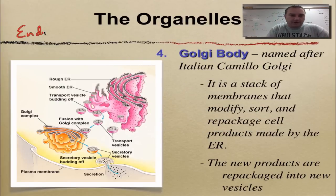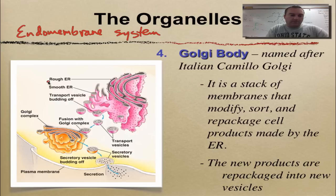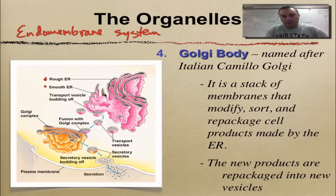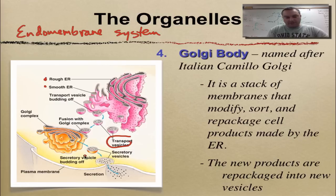The endomembrane system has three parts: smooth ER, rough ER, and the Golgi. This picture is showing you how the endomembrane system works. Materials made by both ERs are shipped into transport vesicles, delivered to the Golgi, and then the Golgi repackages them into new vesicles to ship the stuff out of the cell.